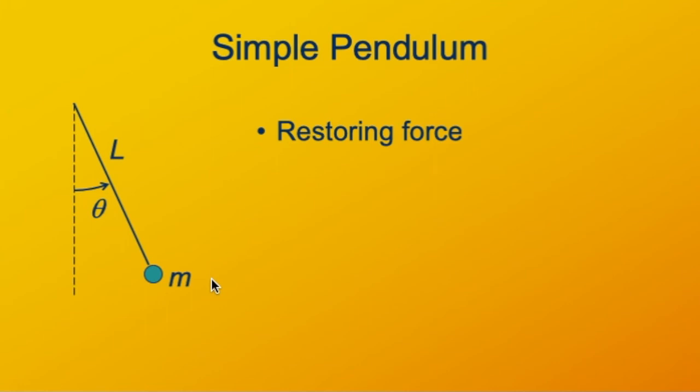There's a restoring force on this pendulum, which arises from gravity pulling down on the mass. If this pendulum's string, or rod, doesn't stretch, then pulling down this way is going to make the pendulum want to swing back down to the vertical.